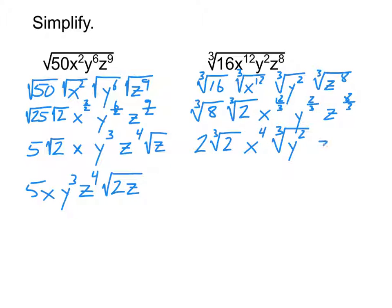And then z to the 8 thirds? Well, z to the 8 thirds, of course, is z to the power of 2 and 2 thirds. I want to take that power of 2 thirds and turn that back into a radical. And so it's going to be cube root of z squared.